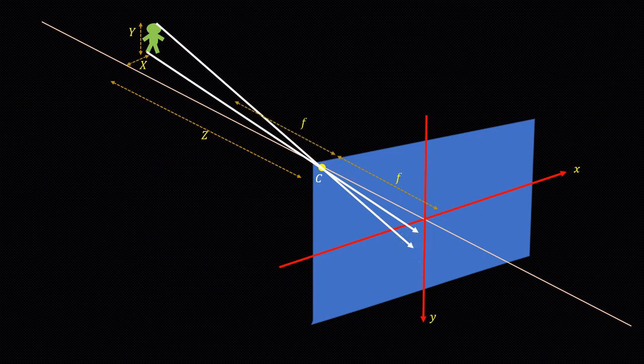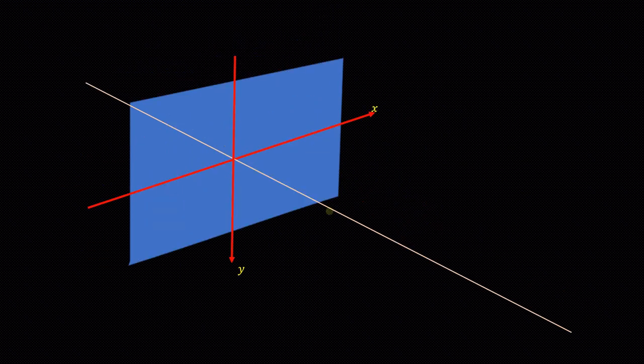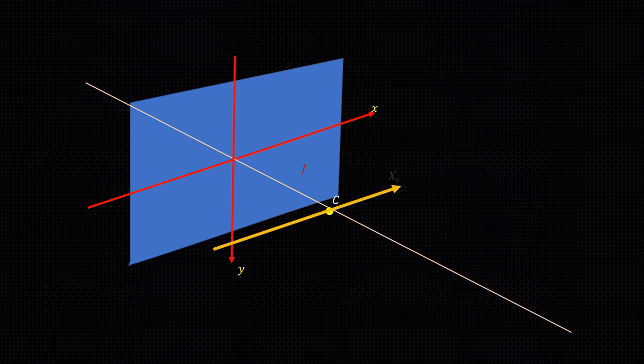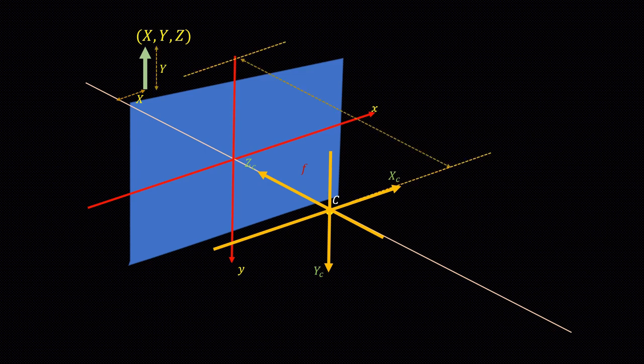We will use the central projection model in which the image plane is at a distance f in front of the camera's origin. We will assign a coordinate frame to the camera with its origin at the optical center. Similarly, we will assign a coordinate frame in the image plane. Point of intersection of the optical axis with the image plane is called the principal point. This will be the origin of image frame.